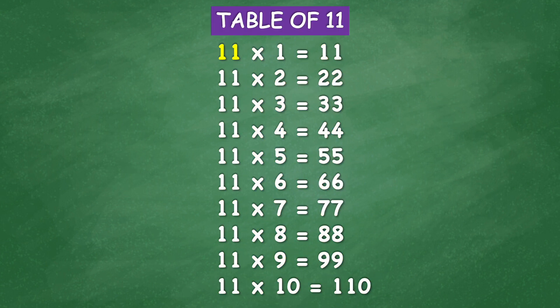Table of 11: 11 times 1 equal 11, 11 times 2 equal 22, 11 times 3 equal 33, 11 times 4 equal 44, 11 times 5 equal 55.